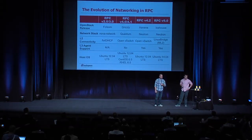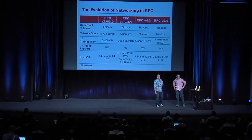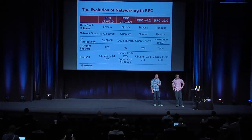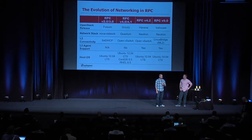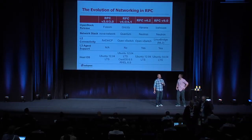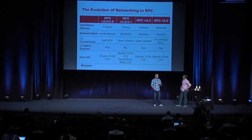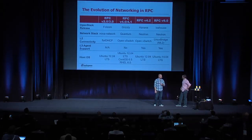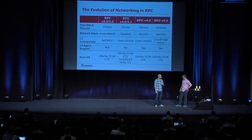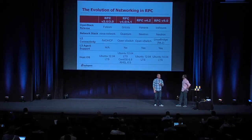Our evolution of networking in RPC looks like this. The first release, Folsom, was Nova Network-based using Linux Bridges. When Grizzly came out, we adopted what was then Quantum and Open vSwitch. The next release, Havana, moved to Neutron — which is Quantum with a new name — and Open vSwitch as well. Based on some of the issues we've had, we decided to settle with Linux Bridge and the ML2 plugin in our most recent Icehouse release.